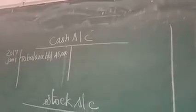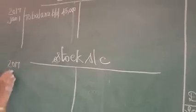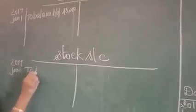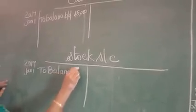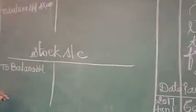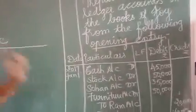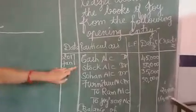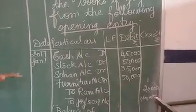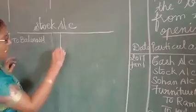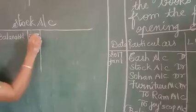Next, stock account — same as cash, it is the opening balance. So we write 'to balance brought down.' Whatever the opening balance is, it should be on the debit side, because all assets have debit balances. So we write it on the debit side. What is the amount? 50,000.